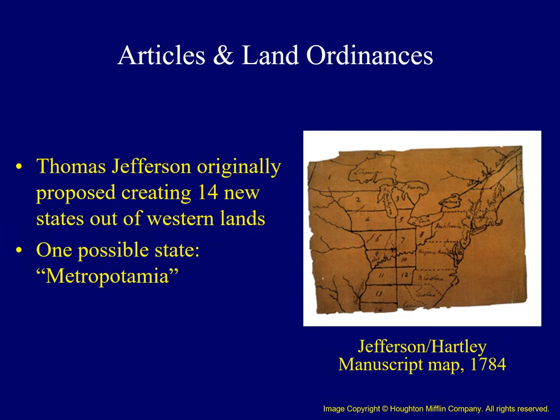As a side note, before the passage of the Ordinances, Thomas Jefferson — a member of the National Legislature from Virginia — proposed the creation of 14 new states out of the lands out west divided on a rigid grid pattern, one of which would be named Metropotamia. The Jefferson-Hartley map shows an original sketch of this plan.